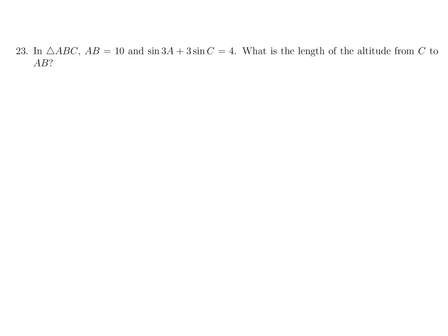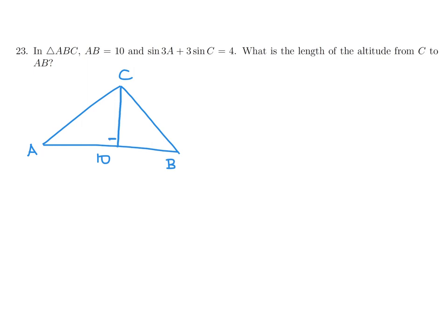In triangle ABC, AB equals 10 and sine of 3A plus 3 sine C equals 4. What is the length of the altitude from C to AB? We have the triangle with AB equal to 10 and need to find altitude H from C to AB.